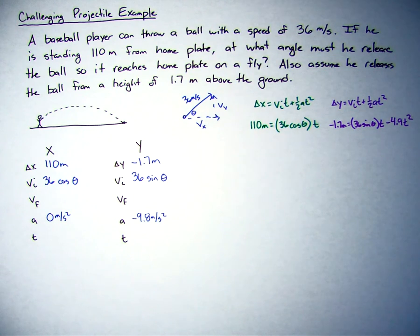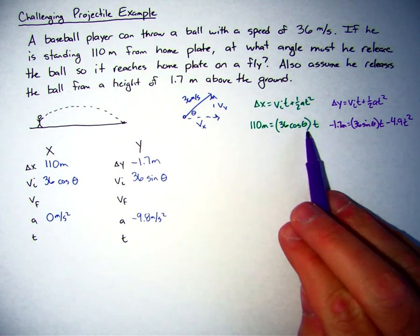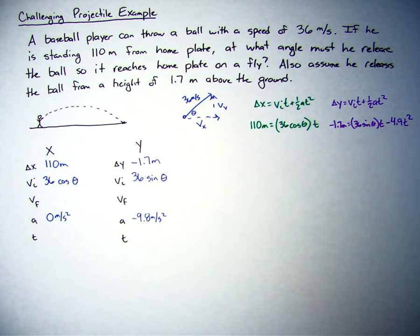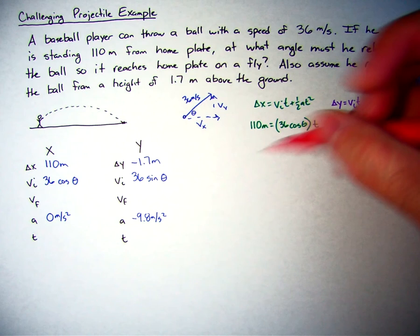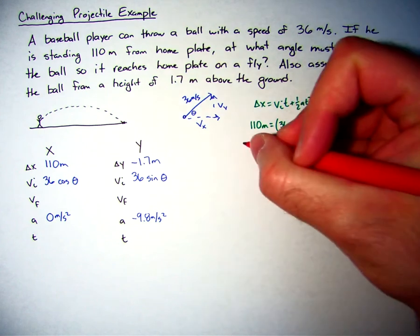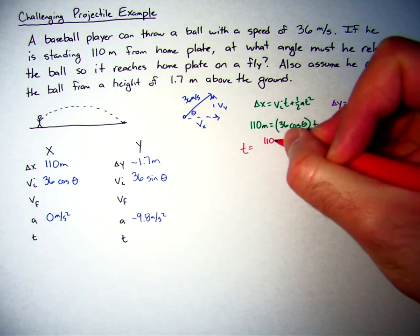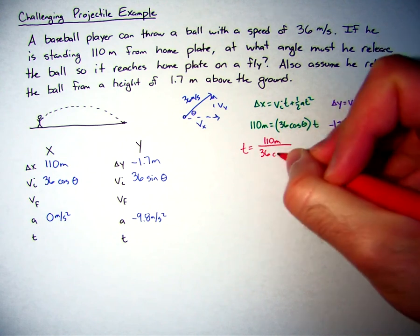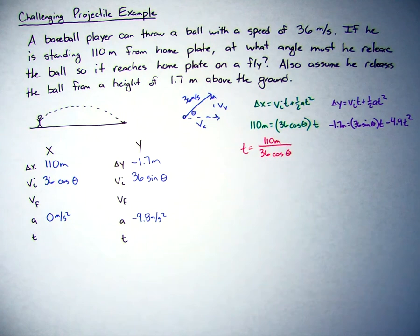Now, the next thing I'm going to do is, if you look, I have a system of equations. I have two variables, two unknowns. I'm missing theta and t in both equations. I'm going to take the first equation for x here, and I'm going to solve that for t. So if I divide both sides by 36 cosine of theta, I get t equals 110 meters divided by 36 cosine of theta.